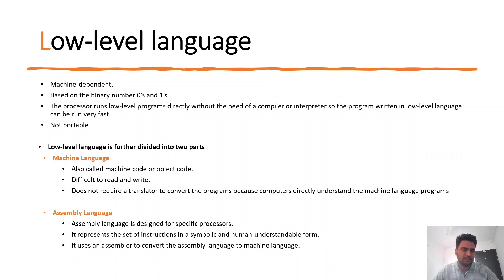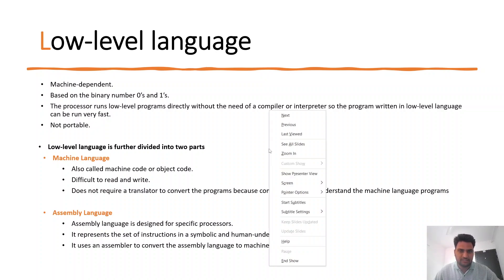There are two languages in low-level: machine language and assembly language. Machine language is binary-based. The code is difficult to read and write for humans, but easy to read and understand for computers. Computers can directly run machine language code — no translator is needed.